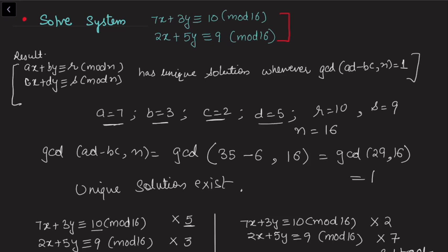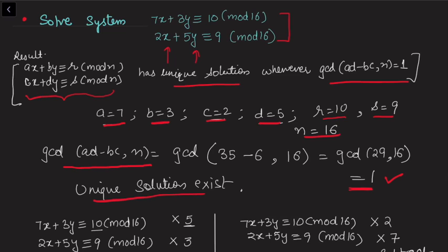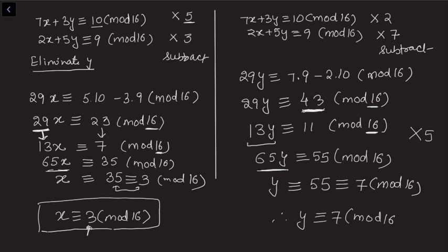Now let's solve a specific system of linear congruences in two variables. We identify the values of a, b, c, d, r, s, and n from the given system and verify that gcd(ad - bc, n) = 1, which holds and confirms a unique solution exists. To eliminate y, we observe the coefficients 5 and 3, so multiply the first congruence by 5 and the second by 3 and subtract. We get 29x ≡ 5(10) - 3(9) (mod 16).